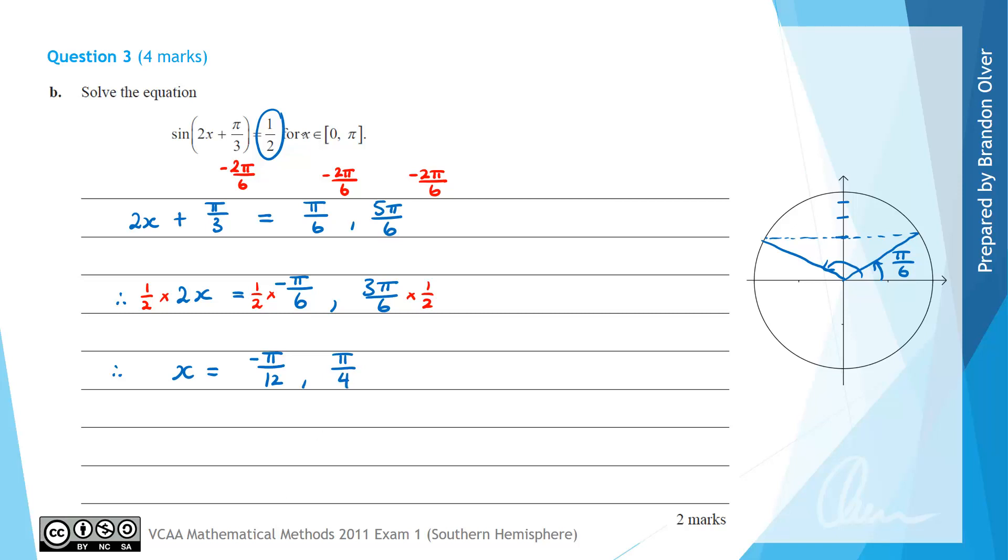Now we have to look back at our domain and see that we want numbers between 0 and pi included. That means negative pi on 12 is outside the domain, however we can find another solution by adding the period onto it. The period of a sine or cosine graph is 2 pi on n where n is the coefficient of x, so in this case n equals 2, so the period is 2 pi on 2 which equals pi. If we add on a period to negative pi over 12, we add 12 pi over 12 to get the solution which is 11 pi on 12.